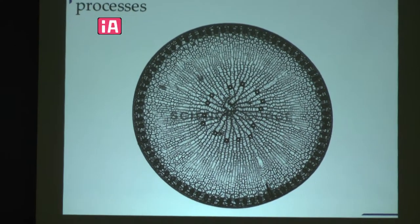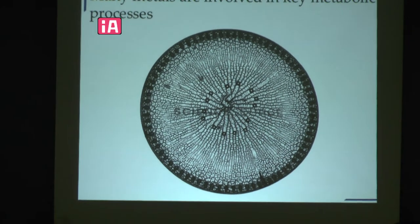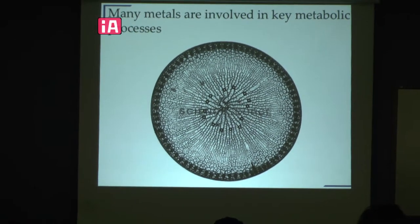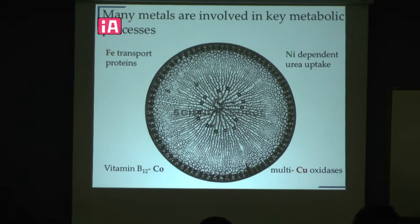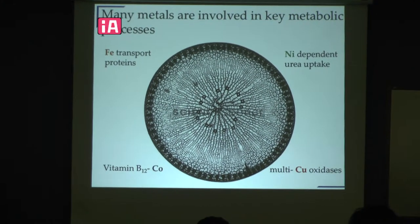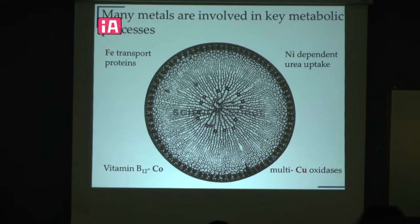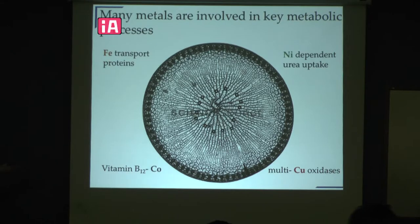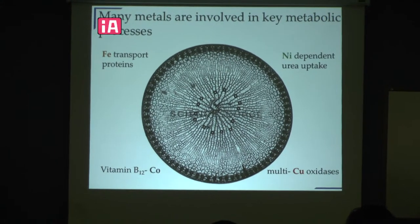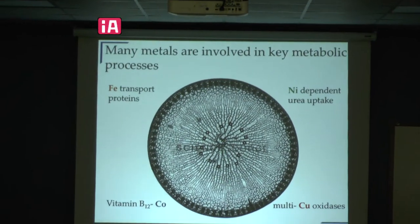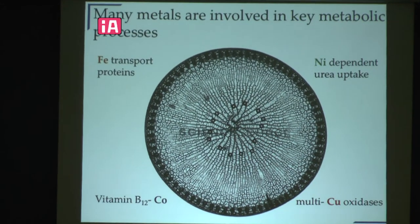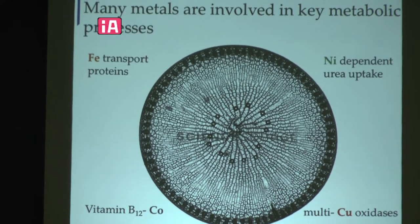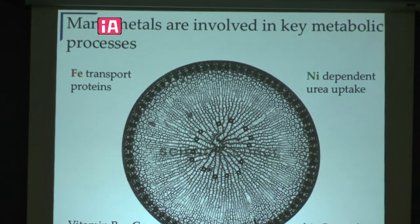This is a picture of a single phytoplankton cell. If we think about what this cell needs in order to grow, it needs several different types of metals from seawater such as iron for different transport proteins, nickel, copper, and vitamin B12 has cobalt as an important metal cofactor. We're interested in understanding the distributions of these metals and how cells can access them to grow at an optimal rate.